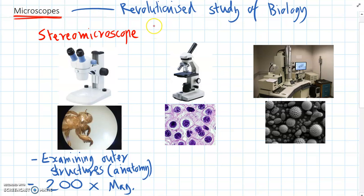The next type of microscope is called a compound microscope. And we can see in the picture here compound microscopes zoom in quite a bit further than stereomicroscopes.